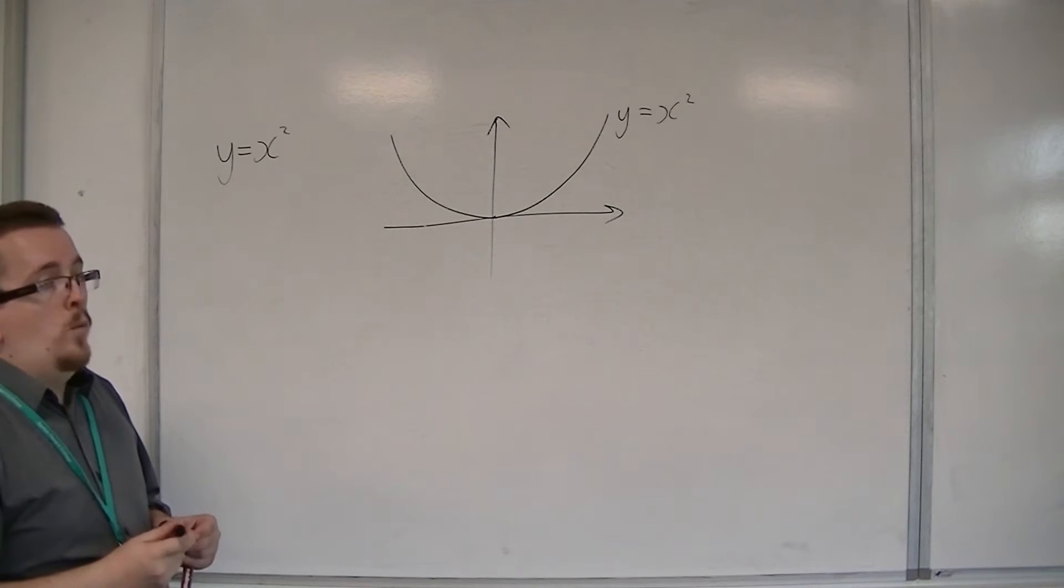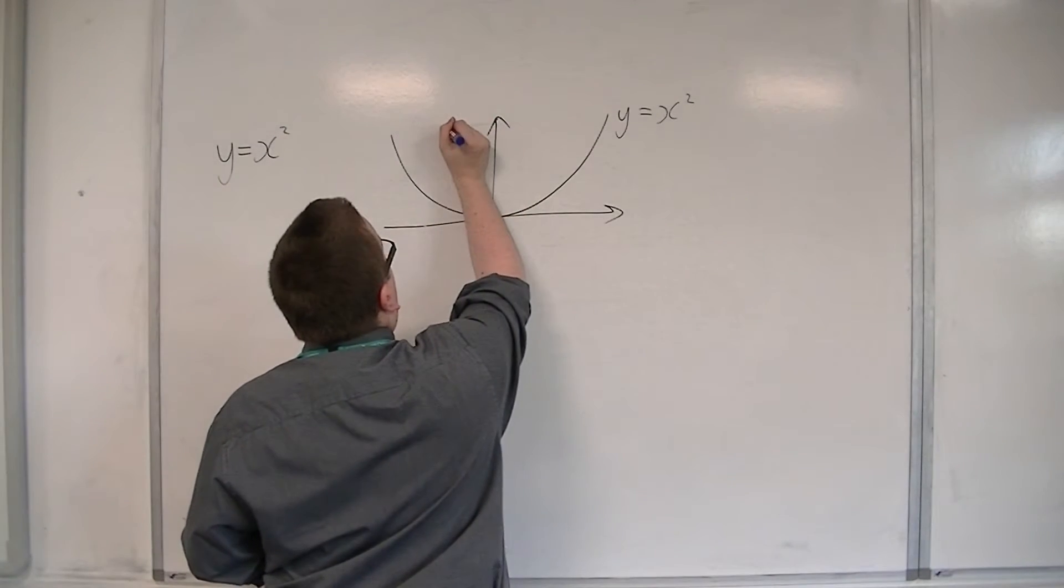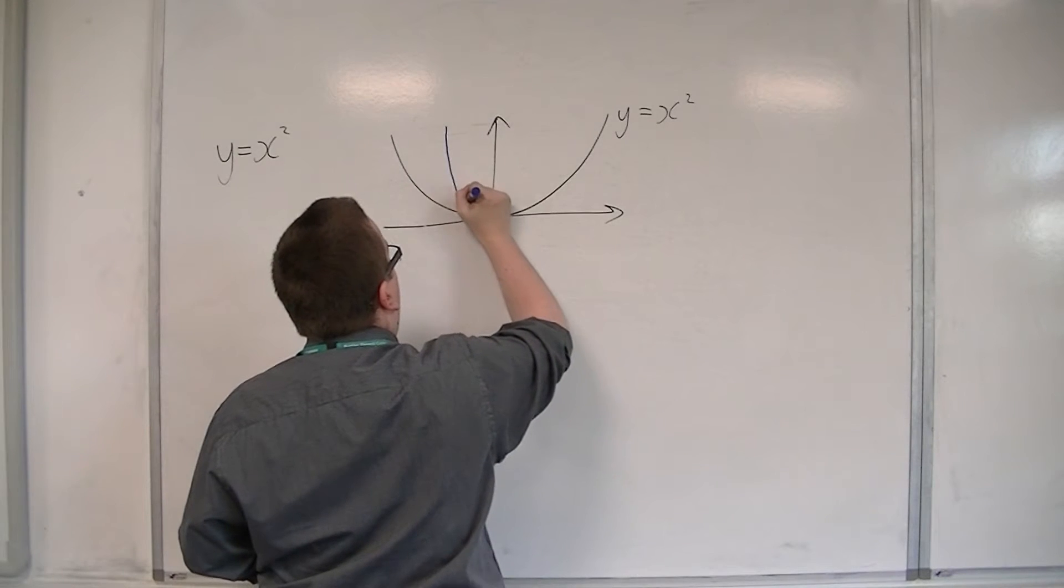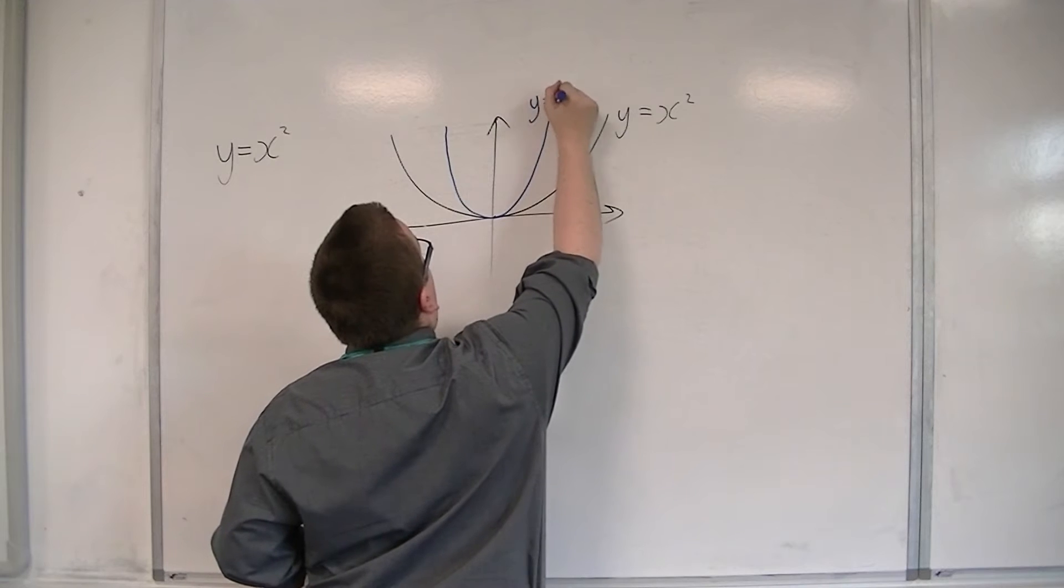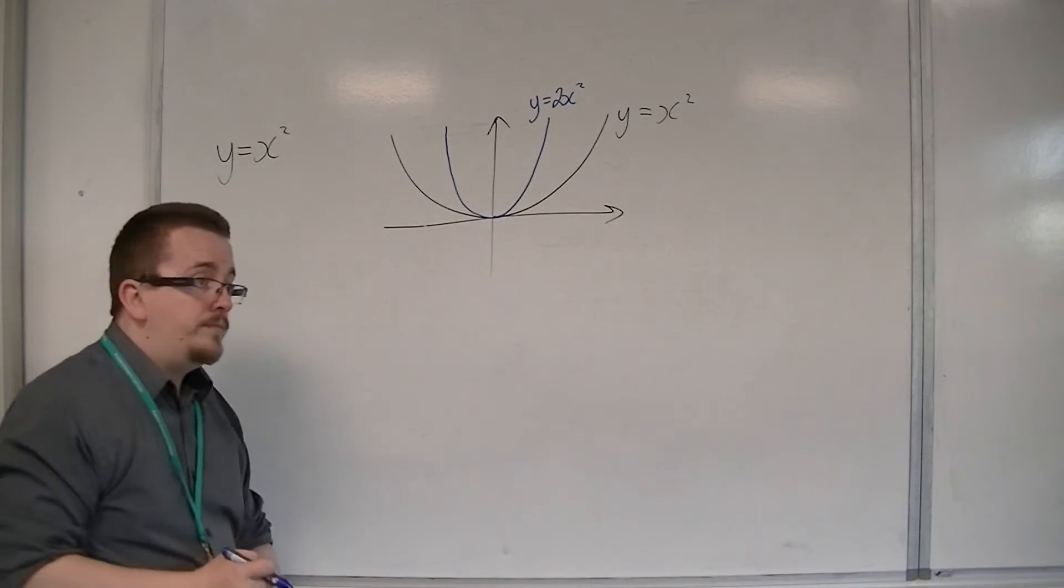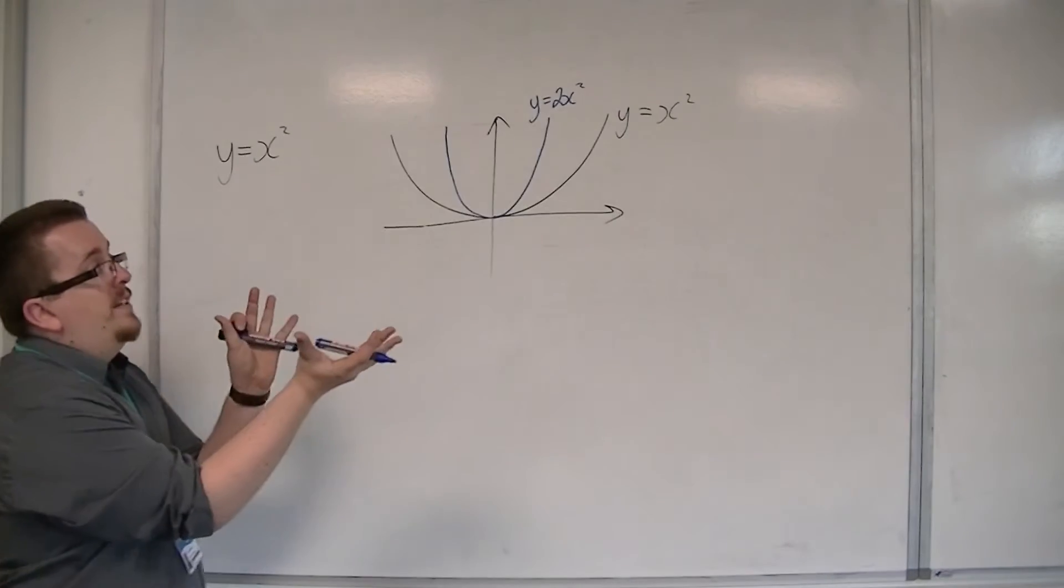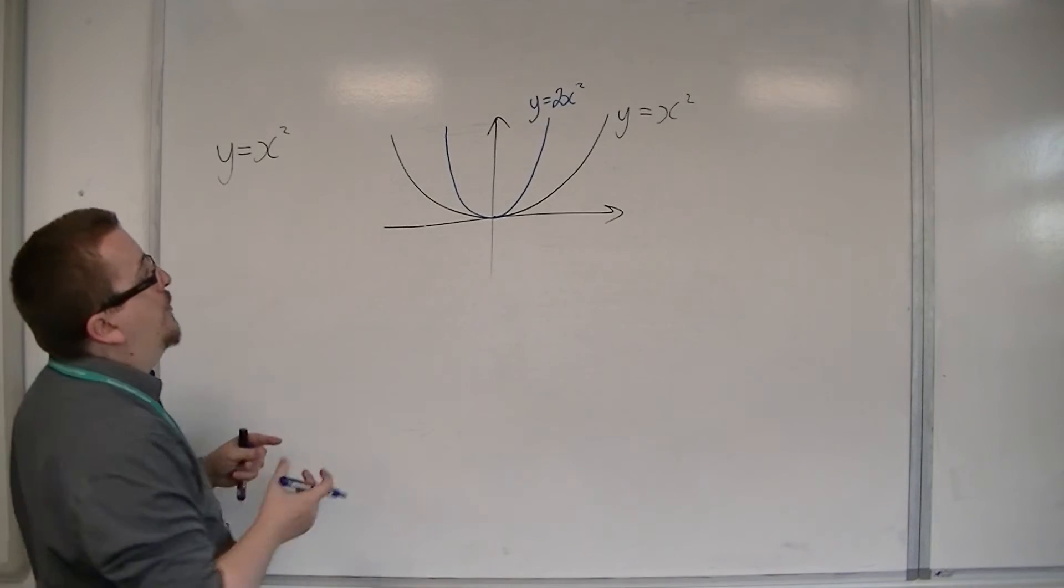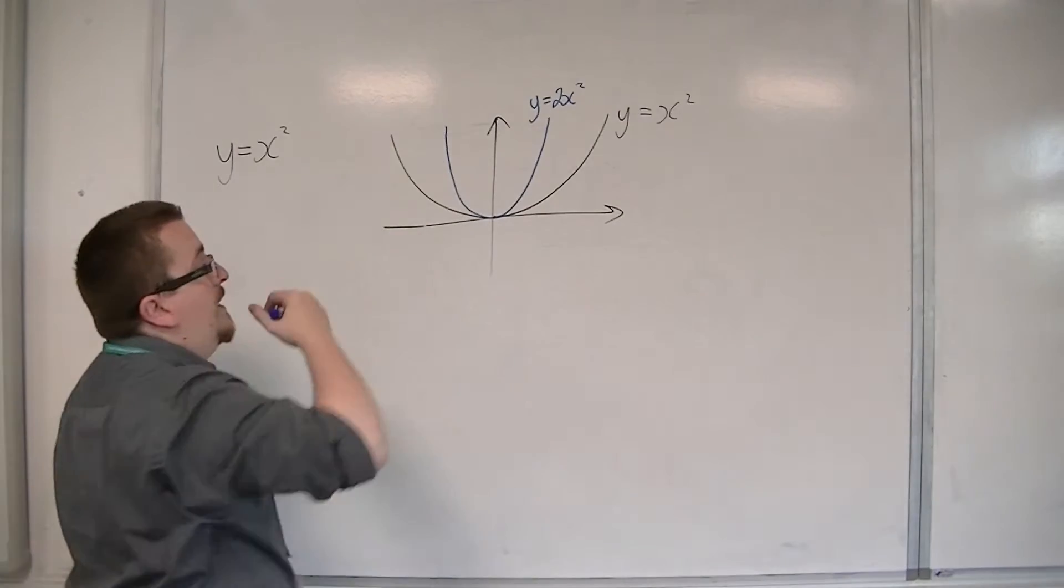If you're thinking about y equals 2x squared, then this looks thinner. When we go through graph transformations, you'll see that the 2, that number in front of the x squared, effectively squeezes the graph inwards. So 3x squared, 4x squared, 5x squared will be ever thinner.